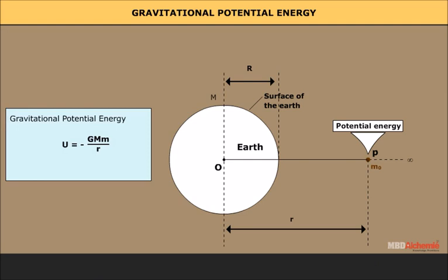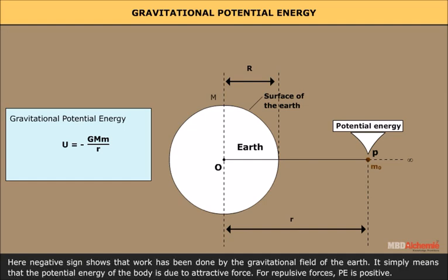Mathematically, gravitational potential energy U equals minus the product of gravitational constant G, mass of body small m, and mass of the Earth M, divided by distance r. U = -GMm/r.